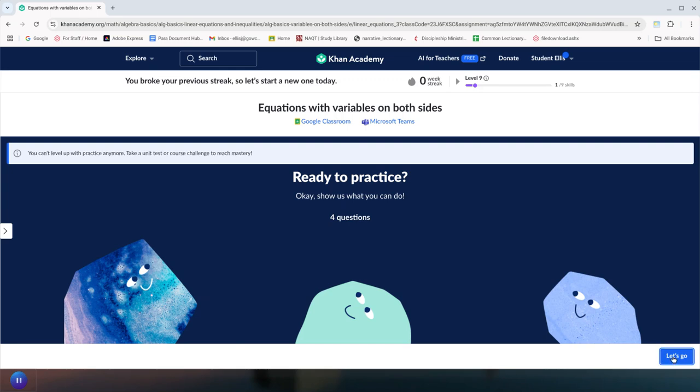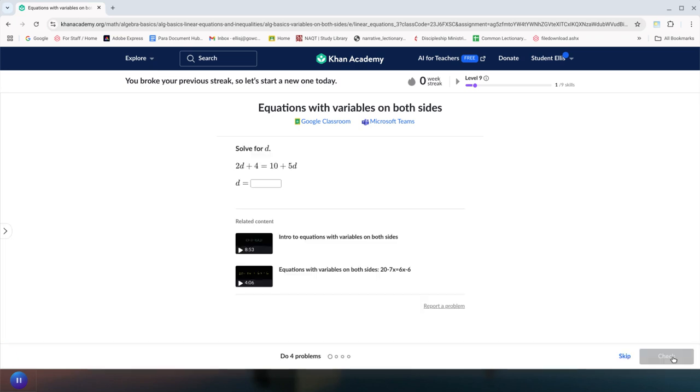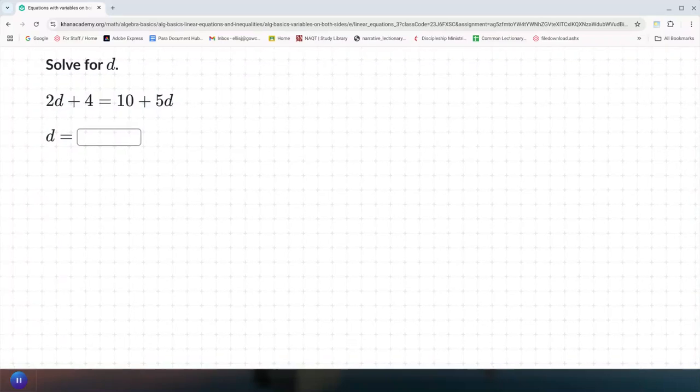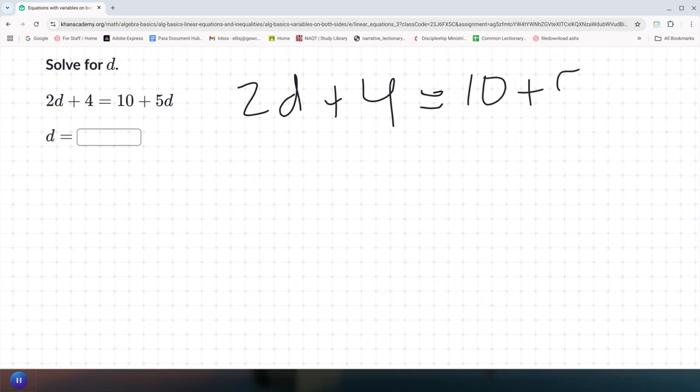I'm just going to do the first two problems, and then you can work on number three and number four. Here is the first problem. It says to solve for d. So we're going to go 2d plus 4, you should be all writing this down, right, equals 10 plus 5d.